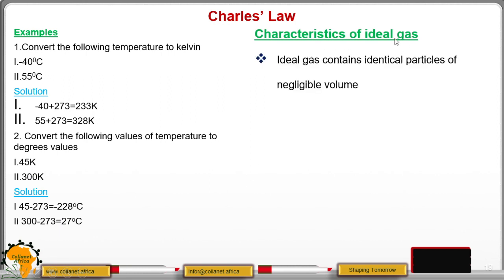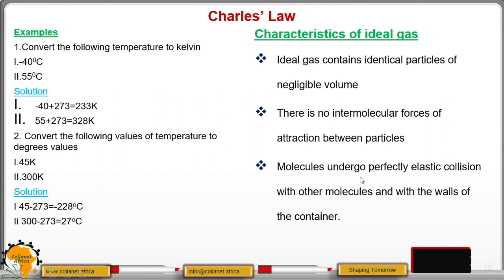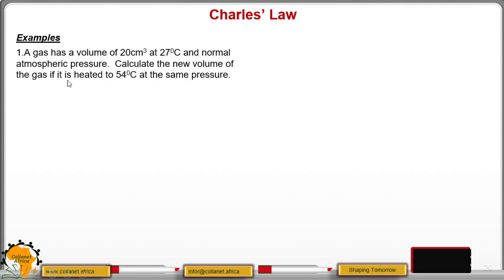From there we can move to the characteristics of an ideal gas. Remember, this ideal gas is the only one that has zero volume at absolute zero temperature. The characteristics are: one, an ideal gas contains identical particles of negligible volume — negligible volume means the volume is almost zero; two, there are no intermolecular forces of attraction between the particles; and three, molecules undergo perfectly elastic collisions with other molecules and the walls of the container.